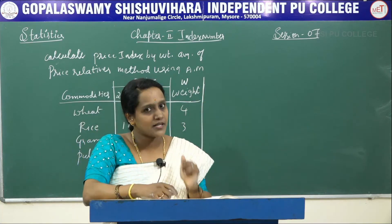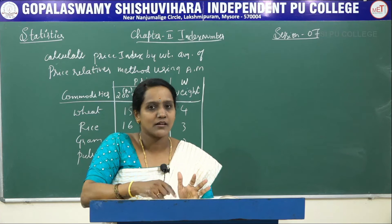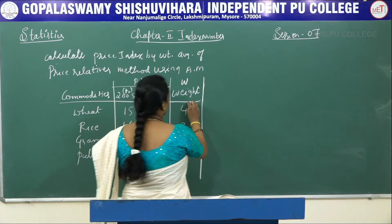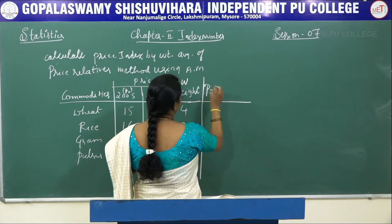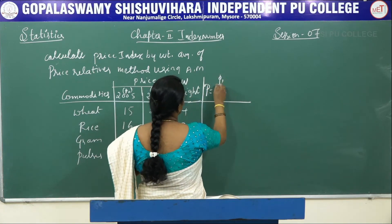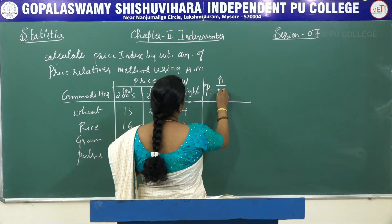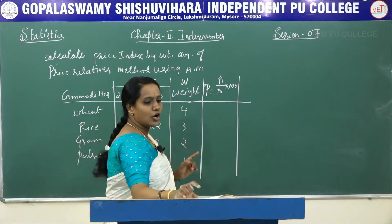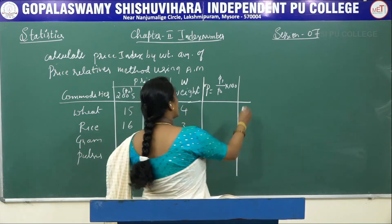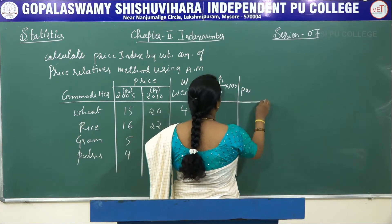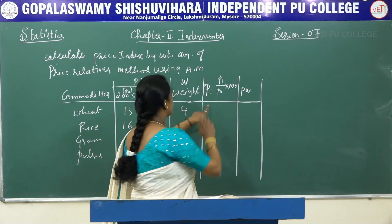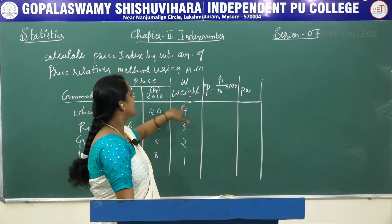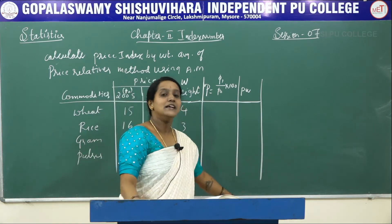As we know that it is a price relative, first we have to write the capital P, that is price relative values. The price relative capital P is P1 by P0 into 100. The next column is P into W — that is after finding the price relative values, we multiply this price relative value with the weights, then we will take the summation.